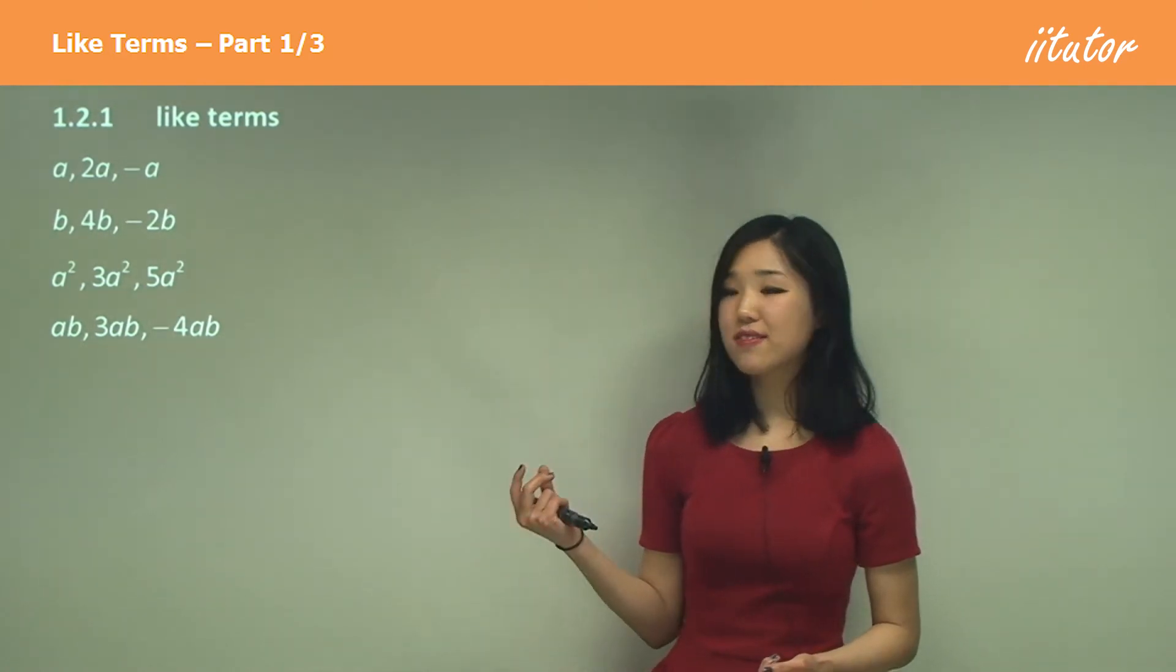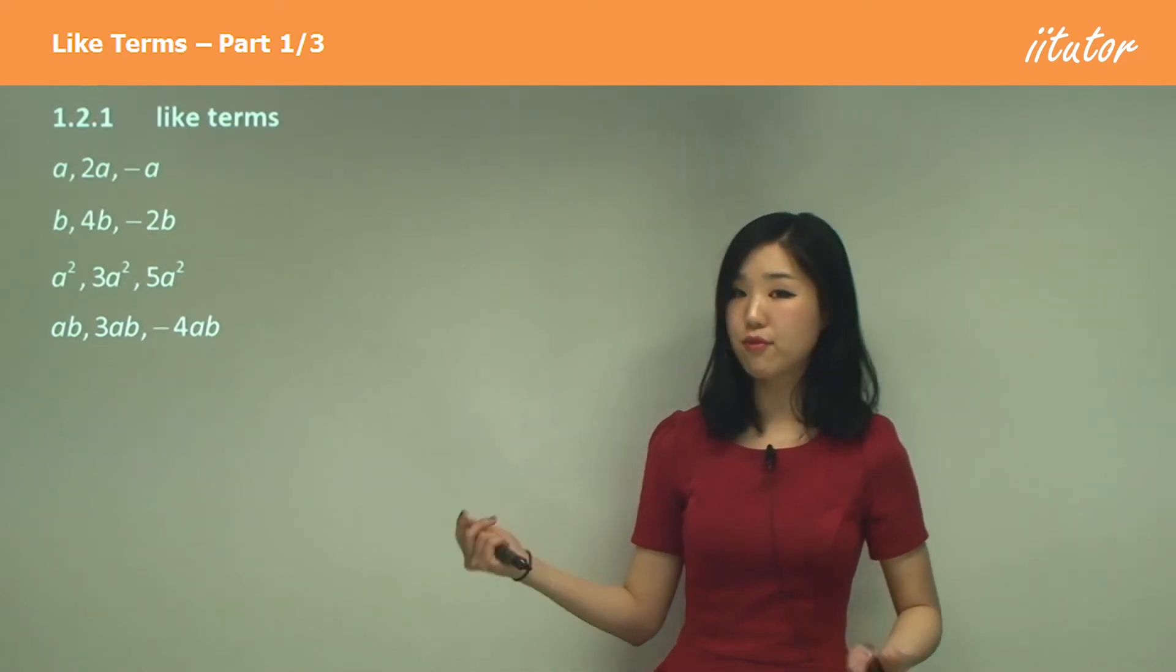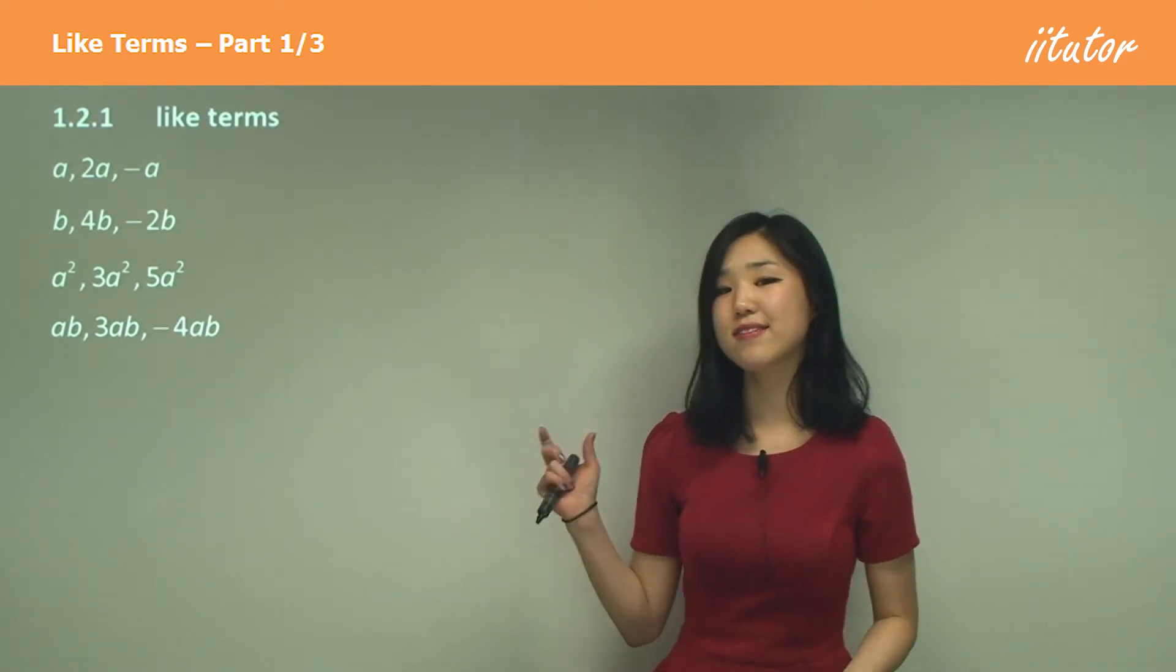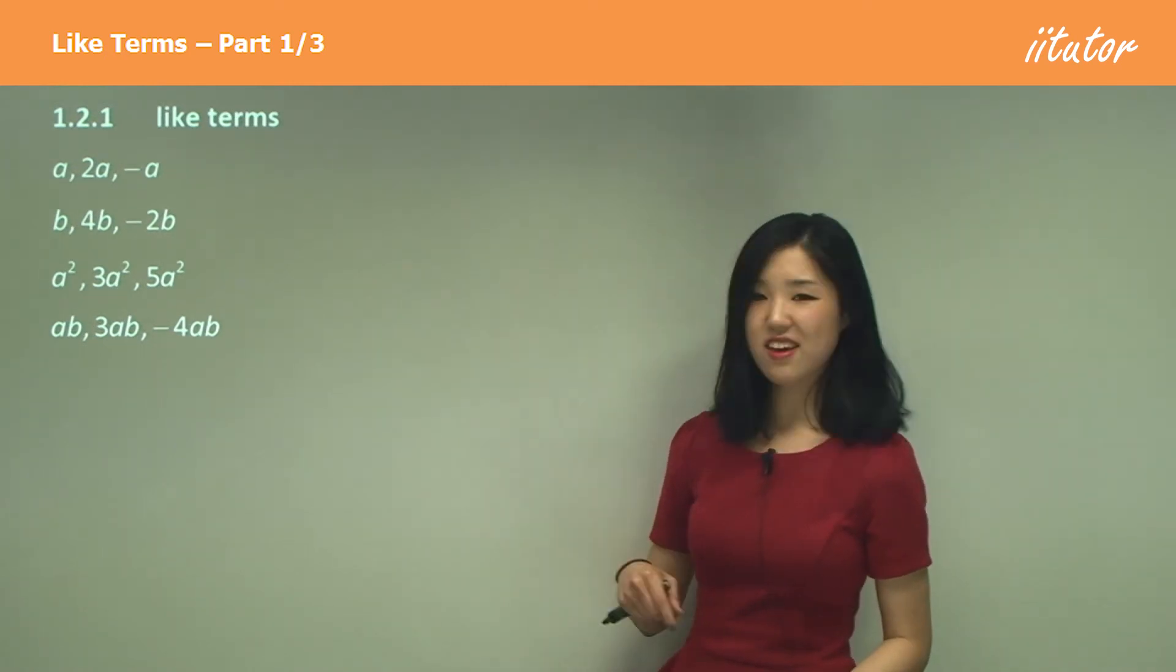Just because they're like terms doesn't mean they only need one pronumeral. They can have a couple, they can have 3, 4, even 5, as long as they are the same. Then they're called like terms. So you get the idea, don't you?